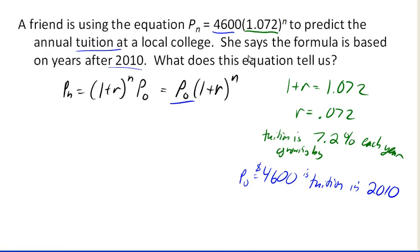So altogether, we can conclude that in 2010, the tuition at this local college was 4,600 for the year. And it's predicted that the tuition is going to be growing by 7.2% each year, and then this model could be used to predict the tuition in future years.